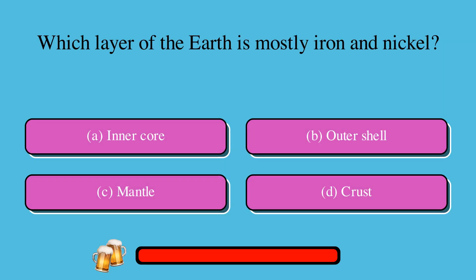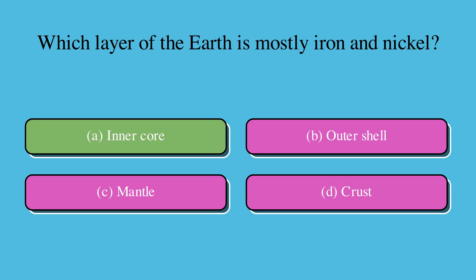Which layer of the Earth is mostly iron and nickel? A. Inner core, or B. Outer shell, or C. Mantle, or D. Crust? The correct answer is A. Inner core.